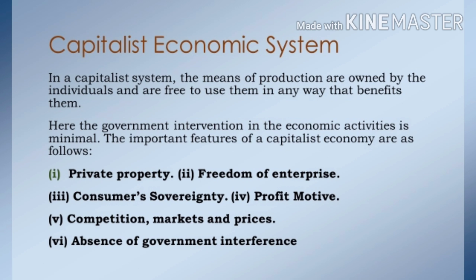The third feature is Consumer's Sovereignty. It is said that the consumer is the king in the capitalist economy. They are free to spend their income on goods and services which give them maximum satisfaction. In a capitalist system, production is guided by the consumer's choice — whatever the people like, the company will produce those products. The fourth feature is Profit Motive. The fifth feature is Competition, Market and Prices — since everybody is free to pursue an occupation of their choice for earning profits, there is intense competition in the capitalist system, and the market forces of demand and supply freely operate to determine the price.